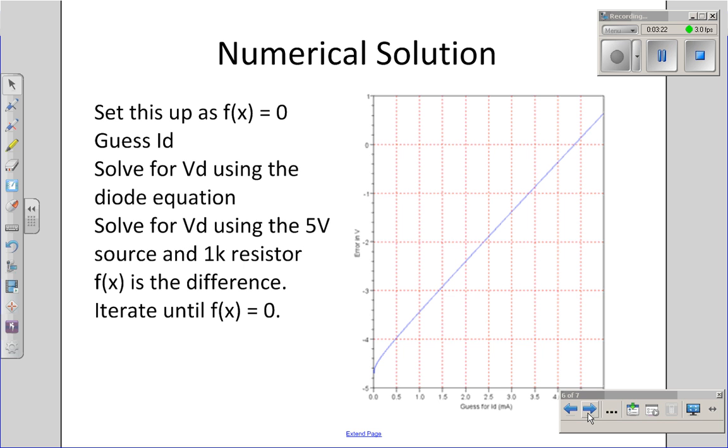A second way to solve that set of equations is to use function equals zero. If I solve for voltage using the diode equation first, if I guess current, I can solve for the voltage across the diode using the diode equation. Once I know the voltage across the diode, I can solve for the current using the voltage source and the resistor. Keep on iterating until the difference in those two currents is zero.